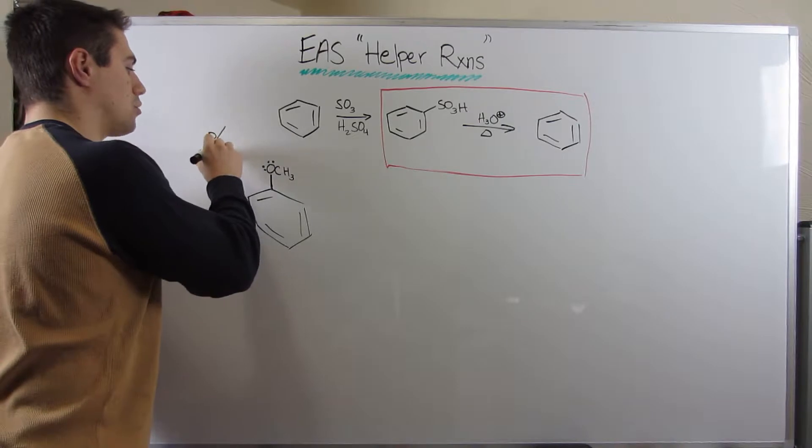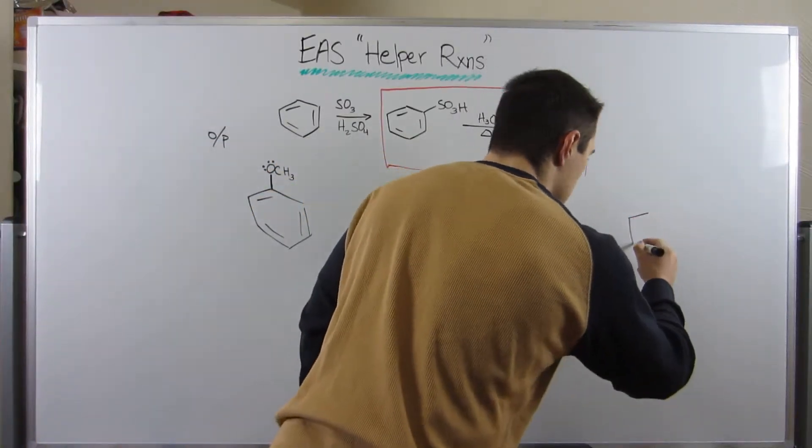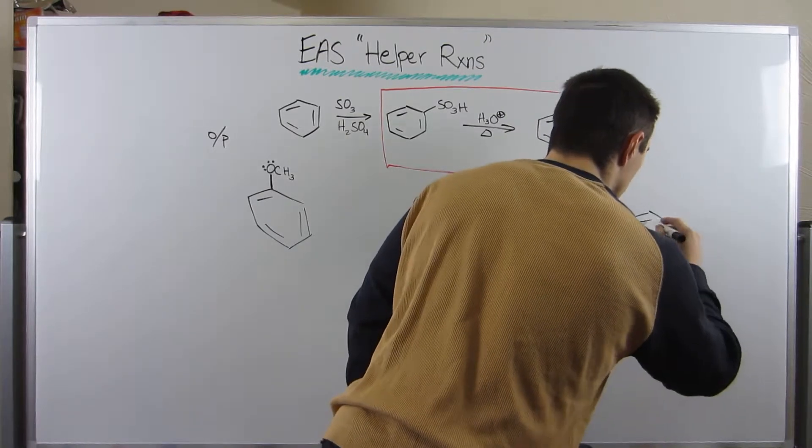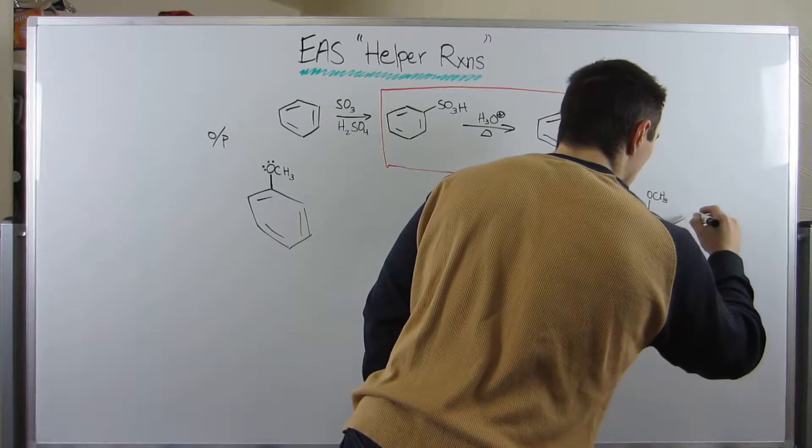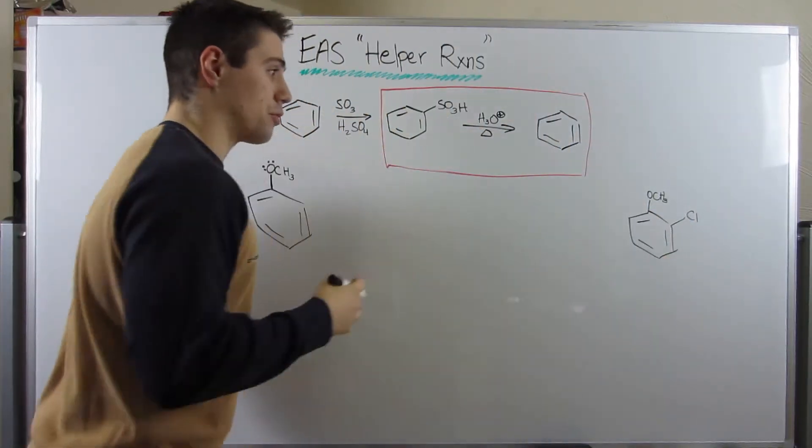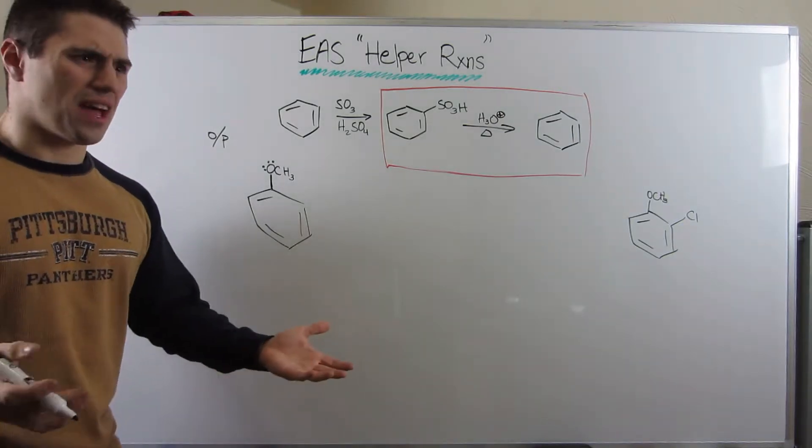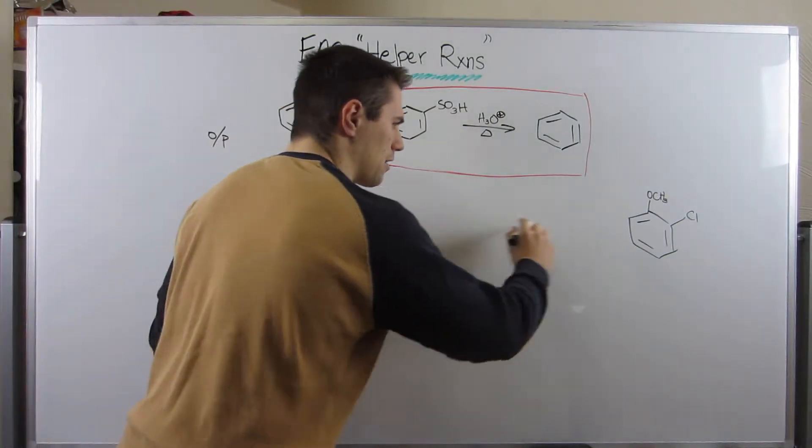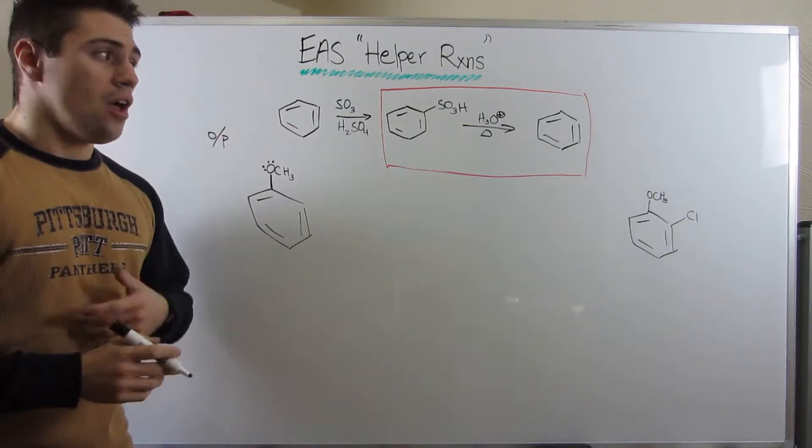Let's just say we were given the task to produce this benzene derivative over here, this benzene-esque product. So you might be thinking, is this really that hard? Why can't we just one arrow go one step with Cl2 and AlCl3?